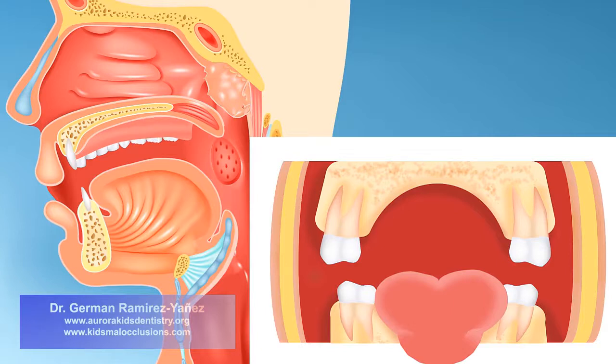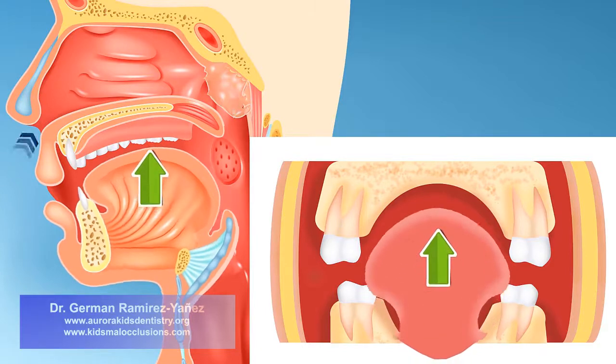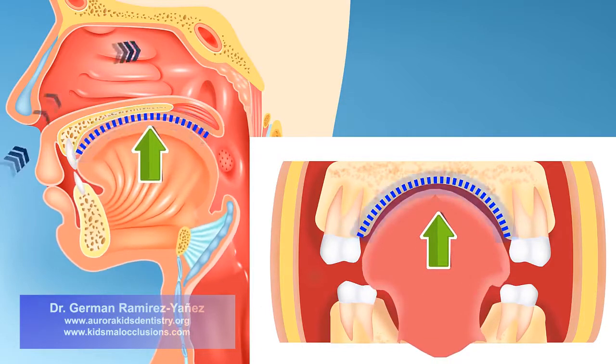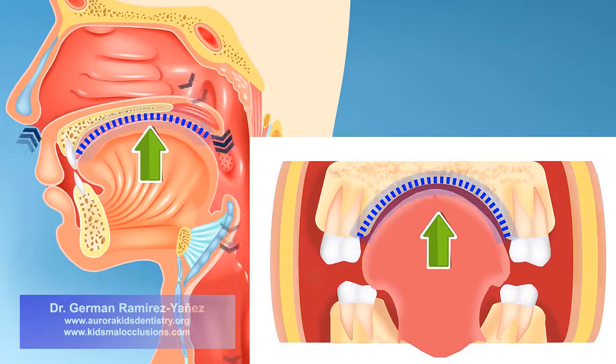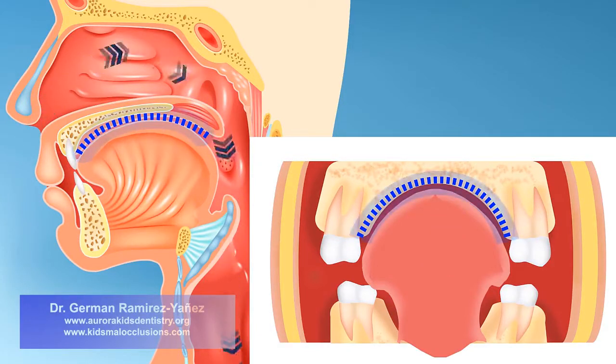Breathing through the nose is the correct way, and so the tongue is able to rest on your palate, stimulating a normal growth and development of your upper jaw.